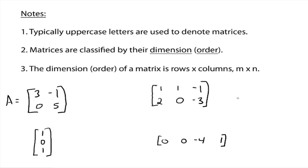Now matrices have a classification. They're classified by their dimension or order. Those words will be interchangeable. So the dimension or the order of a matrix is the number of rows by the number of columns, the m by n thing.